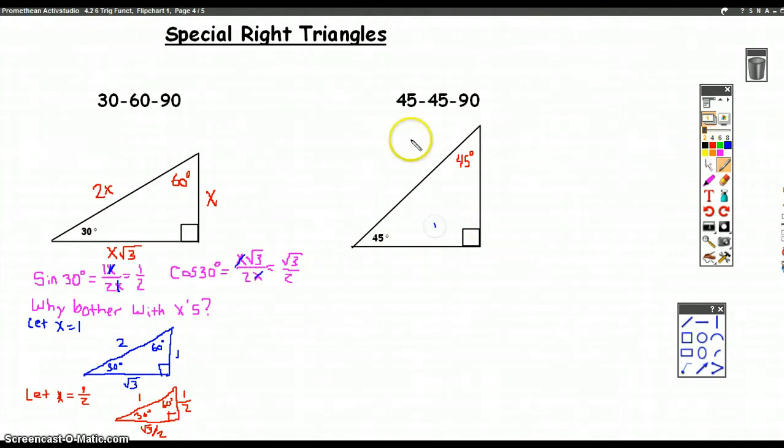...we're at 45-45-90 triangle. Opposite the 45, if we call that X, well, these two angles are the same, so the sides opposite them are the same. So that's X. And if you do the Pythagorean theorem, you'll find that this is X times root 2.